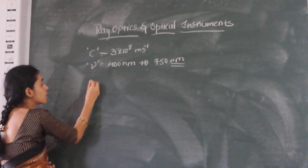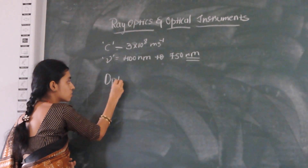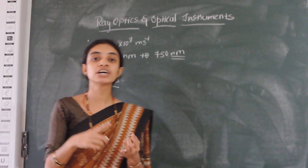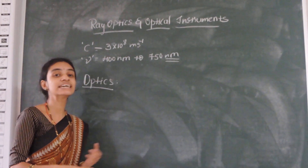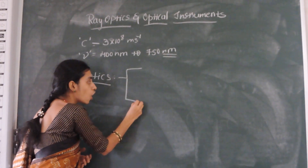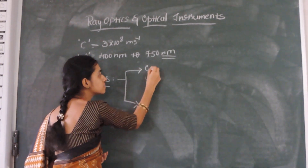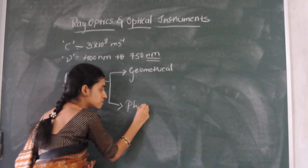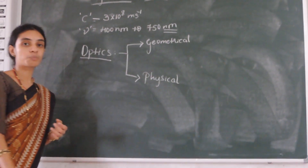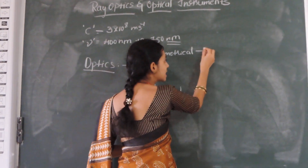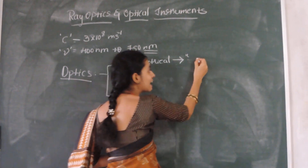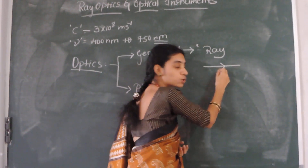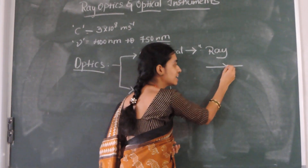The term optics is one branch of physics. It deals with the major sources and certain effects regarding light. Optics can be divided into two types: geometrical optics and physical optics. In geometrical optics, we represent light in terms of rays — a straight line segment with an arrow mark, similar to vector notation studied in the 11th class.